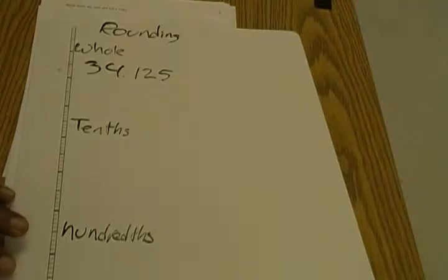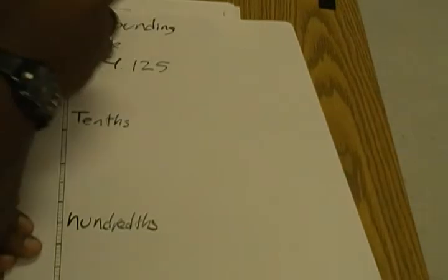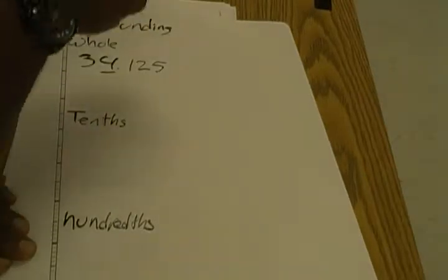First, we're going to round to the whole place, which is the ones place. The way I like to do it: you underline the place value that you want to round, and then the digit to the right of it tells you which way to go.